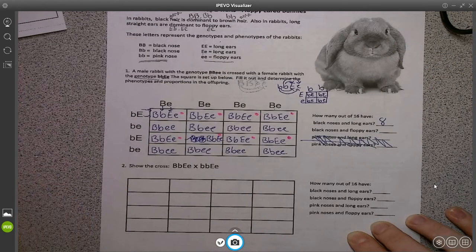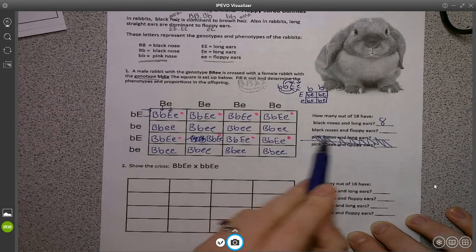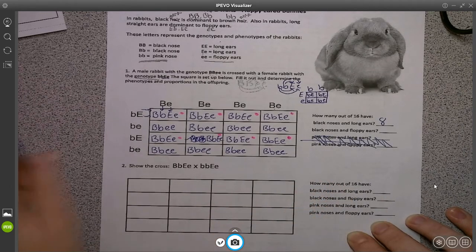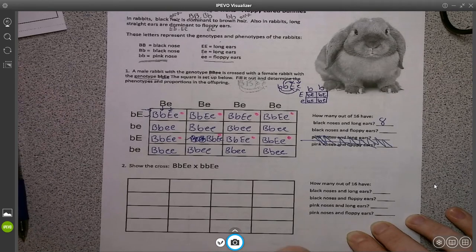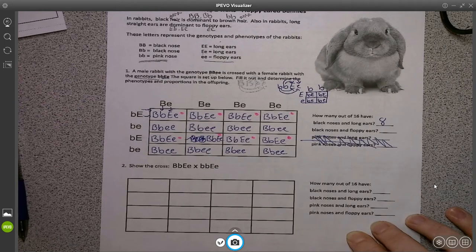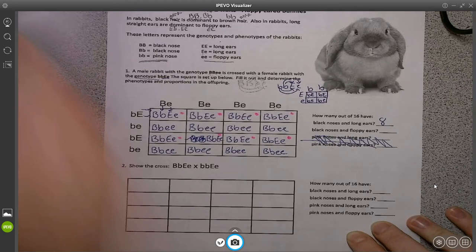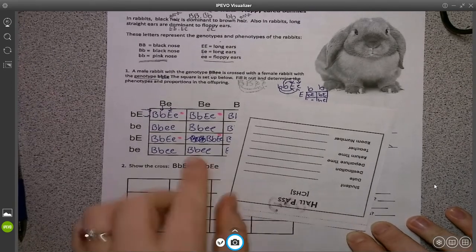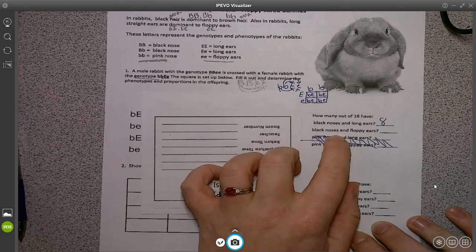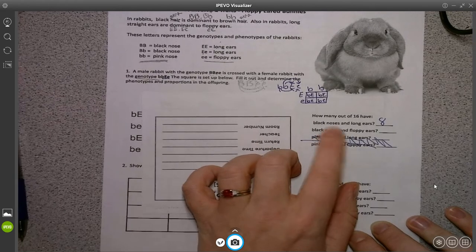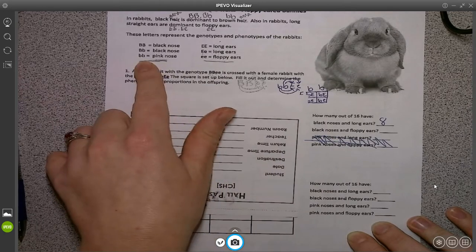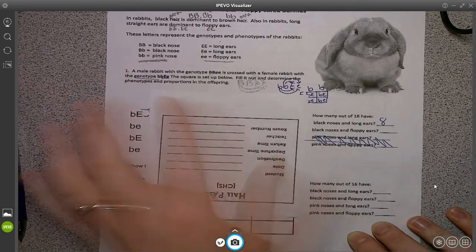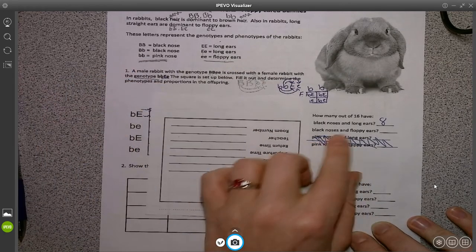All right. Now, you might have noticed the pattern by now. So if you did, go ahead and mark the second one. But if you didn't notice the pattern, we have 16 boxes. Eight of them are taken up. How many more do I have left? But if that isn't something, if you don't trust that, you can always go back and look. Our last option is black noses. And remember, all our rabbits, all our bunnies have black noses. Because none of them have the genotype little b, little b. Not a thing in this particular example.